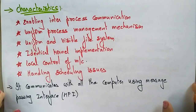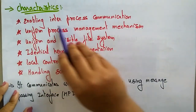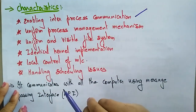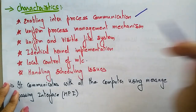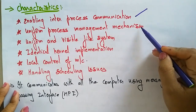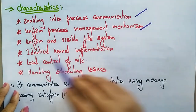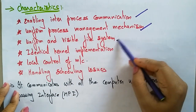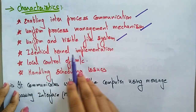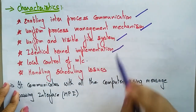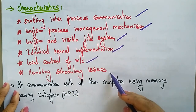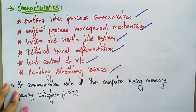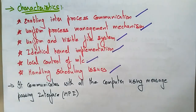Now let's see the characteristics of the distributed operating system. It enables inter-process communication, a uniform process management mechanism is available, uniform and visible file systems are present, identical kernel implementation is there, local control of machines, and handling of scheduling issues — these are all the characteristics of the distributed operating system.